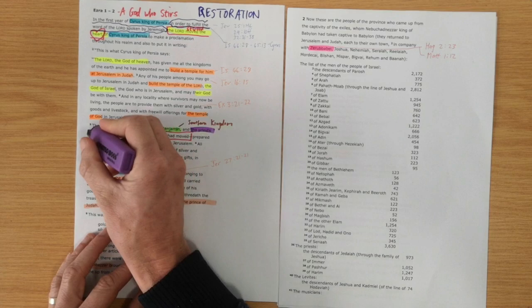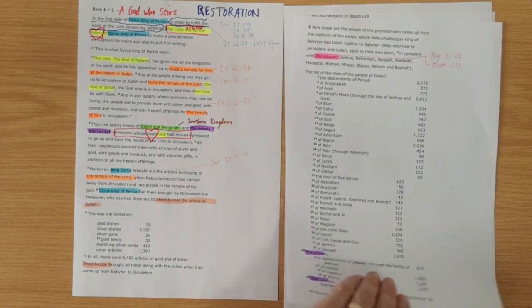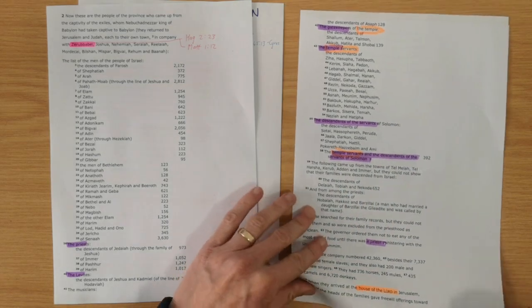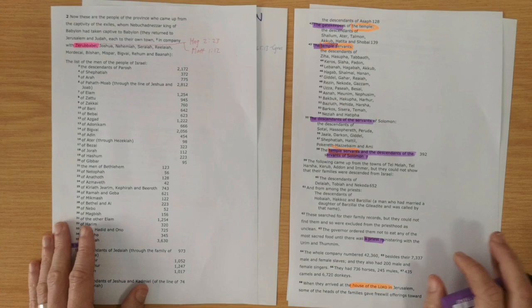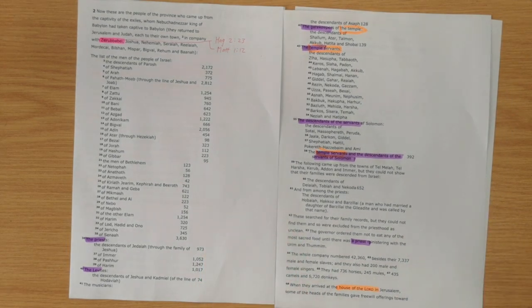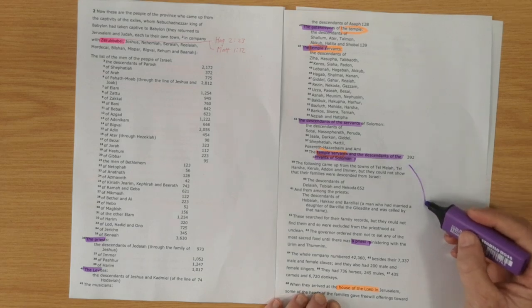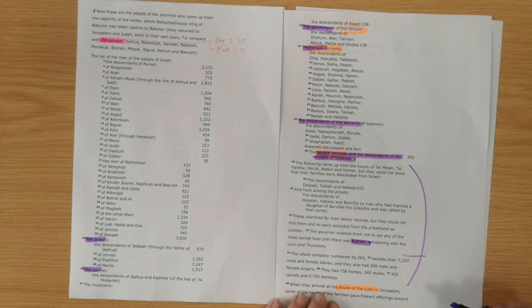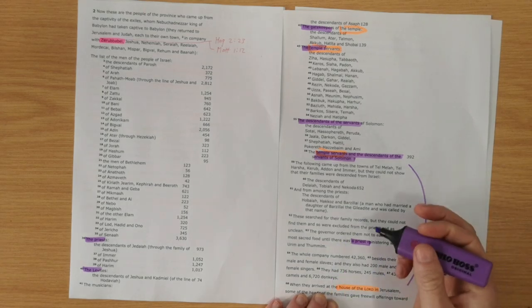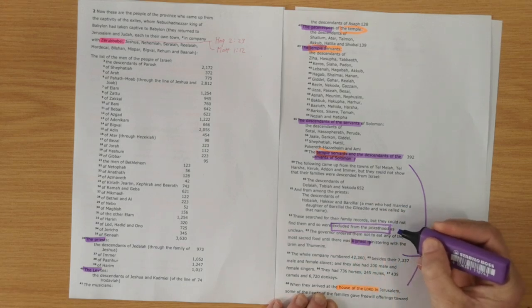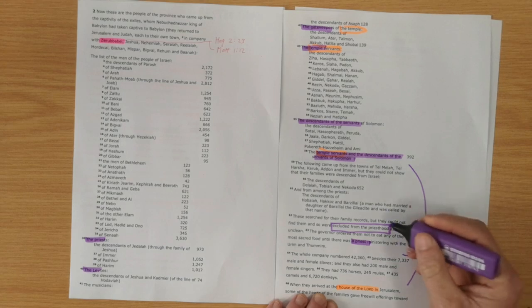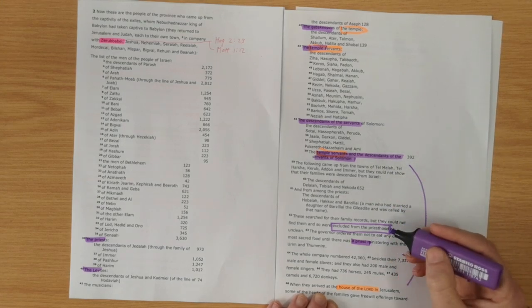It's also important to see that the priests and the Levites are in this group. So they mentioned throughout chapter 2 here, all those involved in the work at the temple. Now, why are the priests important? Well, they are the ones who are going to make sure that God is rightly worshipped in the temple. And that's what the people are concerned about. And that's why this little section where you've got up to here, these people, they couldn't work out, are these actually descendants of Israel? And then it says that they were excluded from the priesthood here.